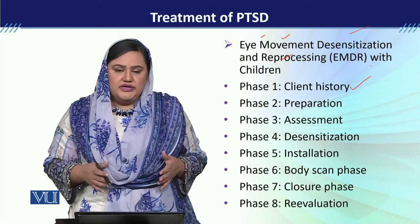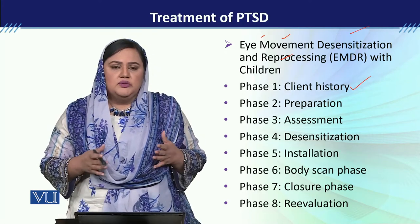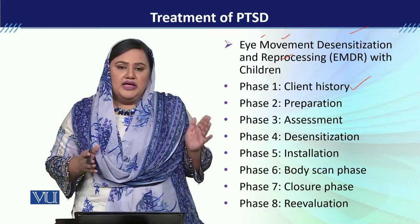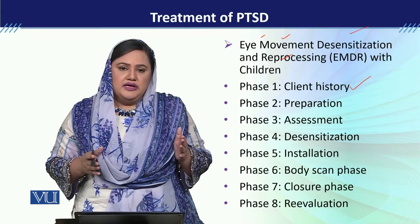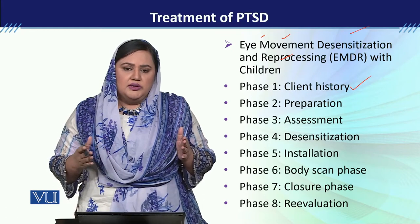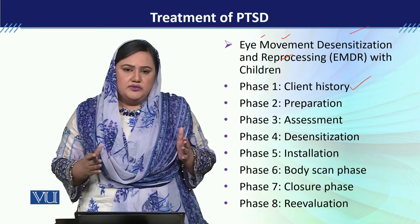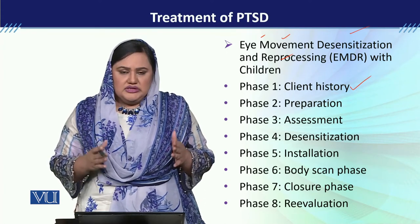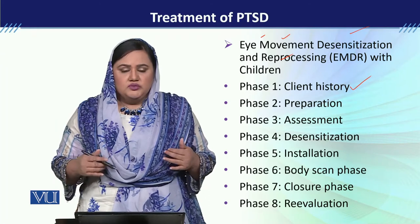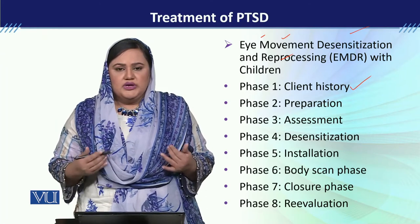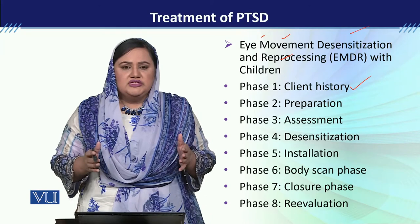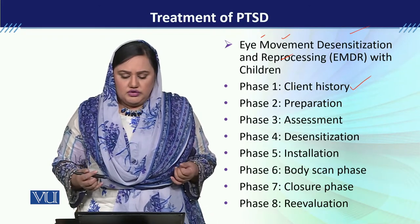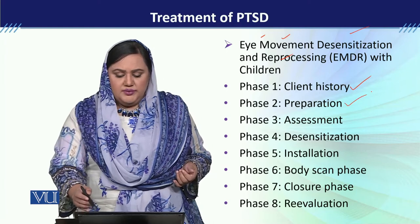Number one is client history. In client history, we take complete details of what happened to the client, how it happened, and then we also look at their developmental stages, family life, friends, schools — all of their history. We focus especially on their non-verbal behaviors to understand at what level their distress is present.